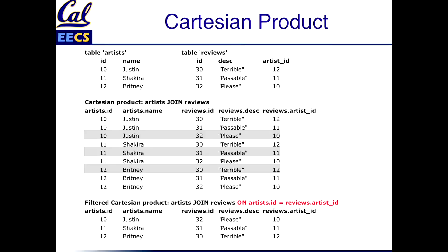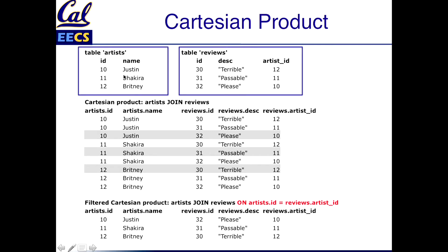I wouldn't present that as a motivating example unless there was actually a way to make the code look that way. So to do that, let's introduce — or if you've seen databases before, briefly review — the concept of the Cartesian product of tables. Here I have a table of hypothetical pop artists, and I also have a table of reviews with a short description of somebody's opinion of that artist. I could take the Cartesian product of these two individual tables, which means taking every combination of rows from the tables and mashing them together.